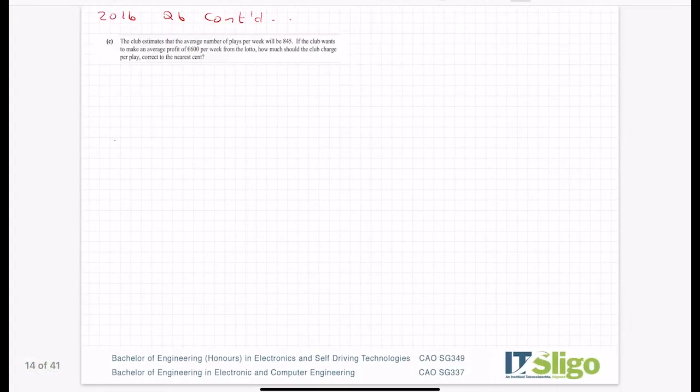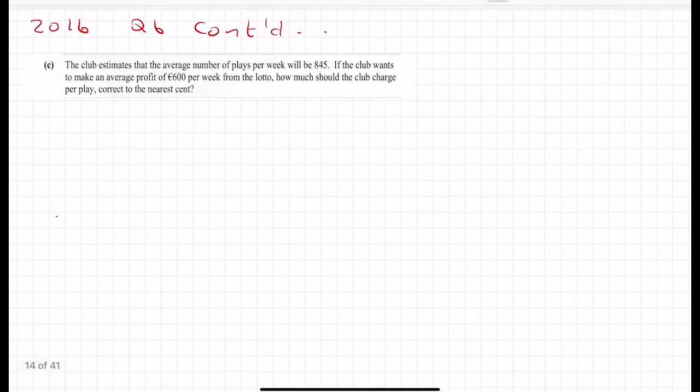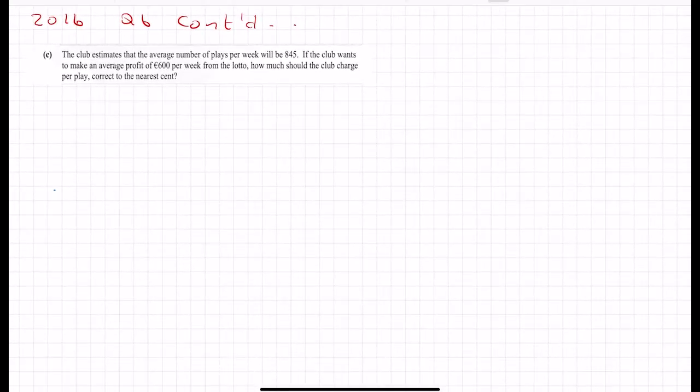That's how you do that particular part of that question. And I have a feeling there's another part to it. The club estimates that the average number of plays per week will be 845. So they've gathered data over a length of time, and they know that on average there's 845 games played per week. If the club wants to make roughly a profit of 600 per week from the lotto, then how much should they be charging for the game?